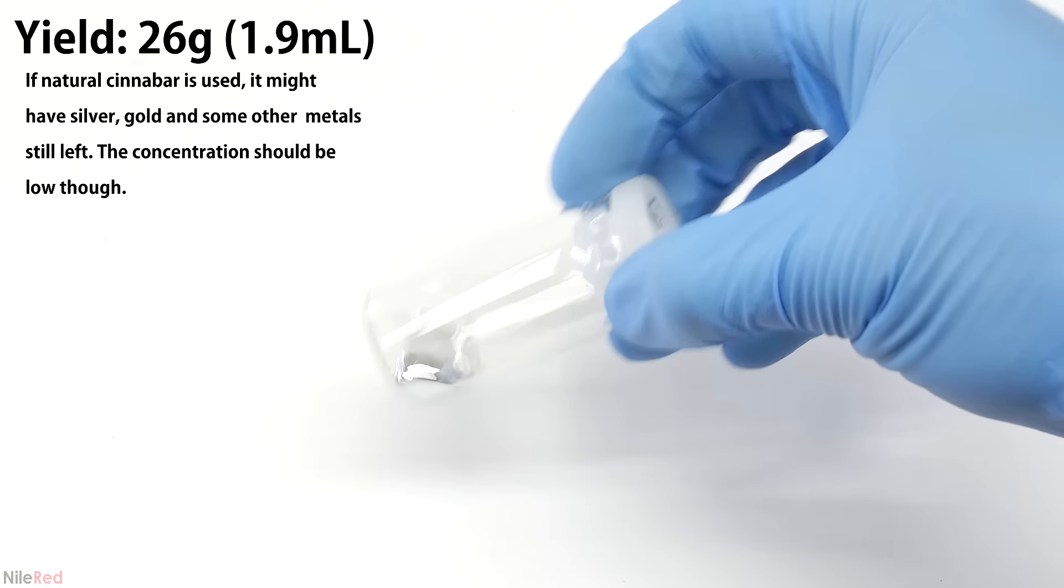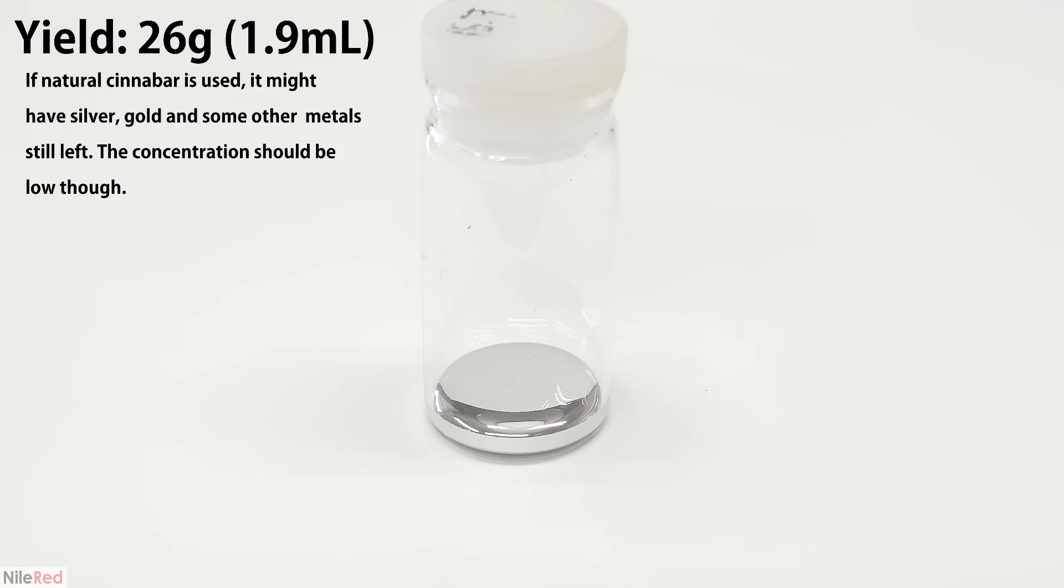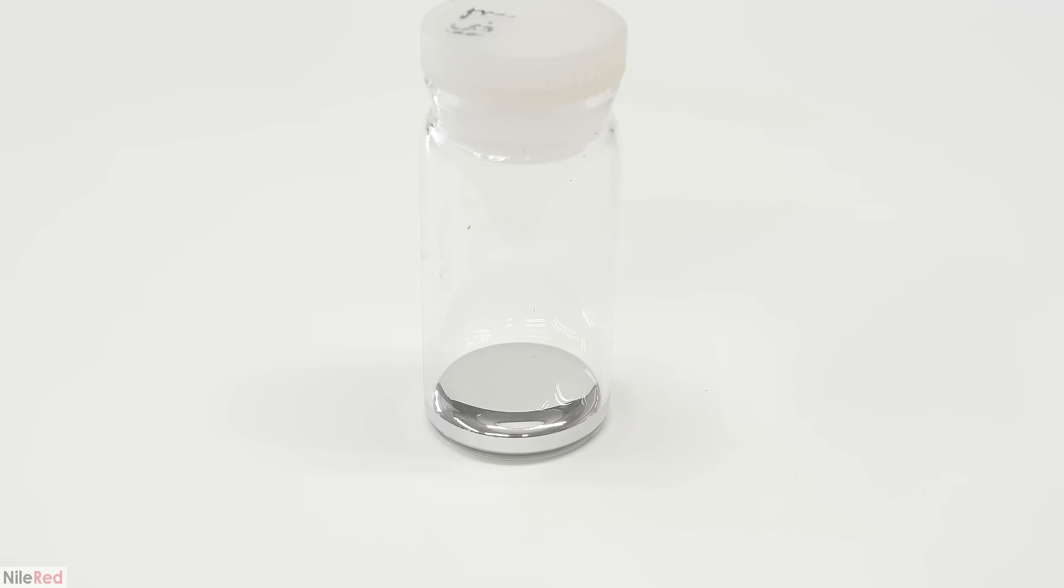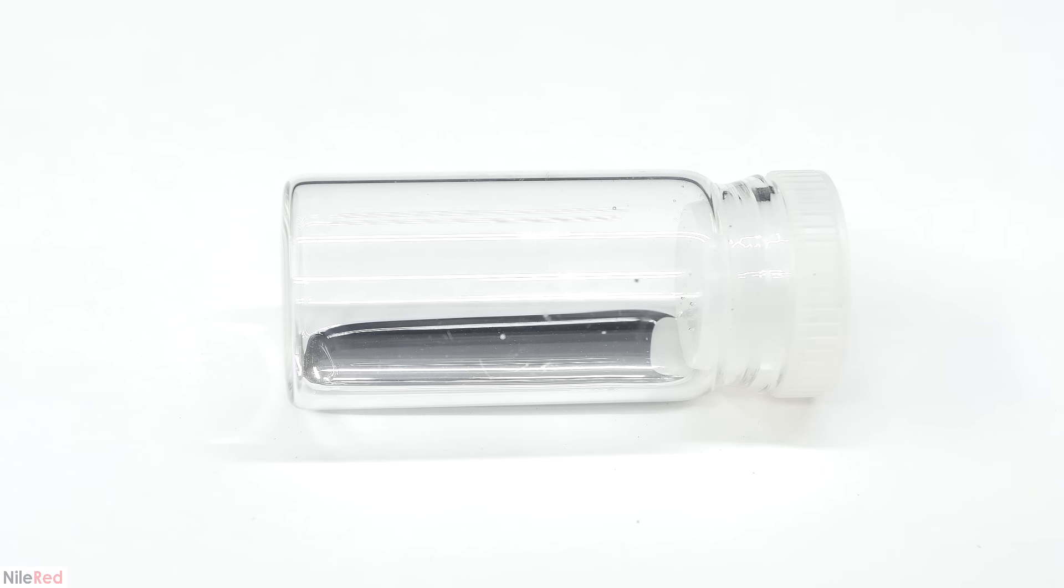The final yield of mercury is 26 grams, or 1.9 milliliters, which corresponds to about 30.2 grams of pure mercury sulfide. Considering that I started with 270 grams of waste, it means that most of what I had was just silica gel and sea light. This actually makes sense because the reactions that I used the mercury in were all pretty efficient, so I wouldn't expect there to be too much in the waste. If all of my mercury sulfide had been somehow pure, I would have gotten around 230 grams of mercury metal, or 17.2 milliliters, which is nearly 10 times more.